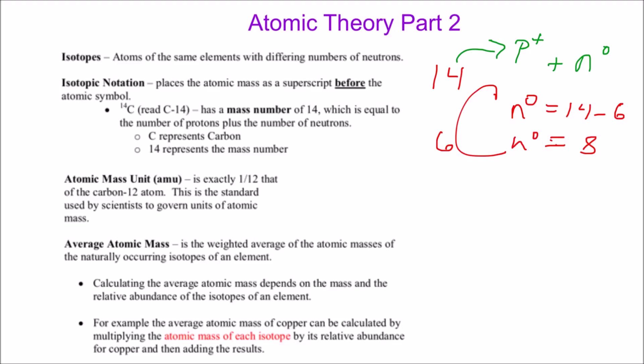This is called isotopic notation — we write the atomic mass in the top left of the atomic symbol and the atomic number in the bottom left. The atomic mass unit, or amu, is one we'll briefly touch on. The amu is exactly one-twelfth of a carbon-12 atom.